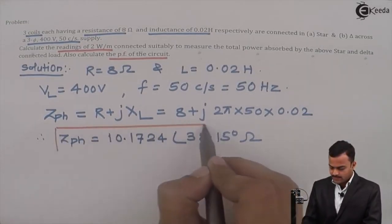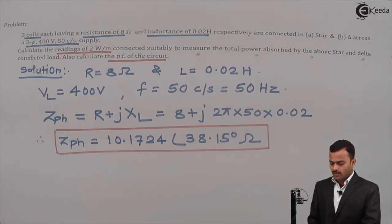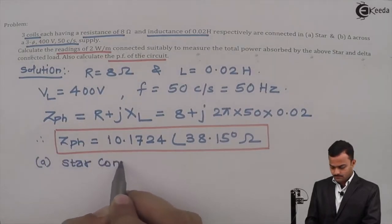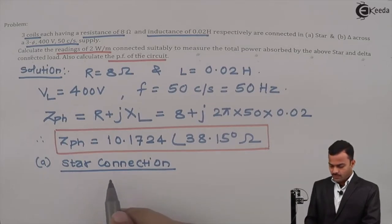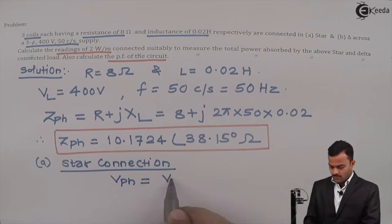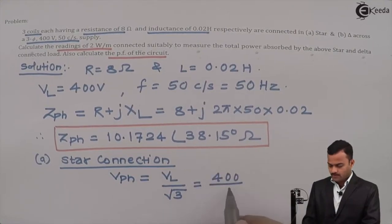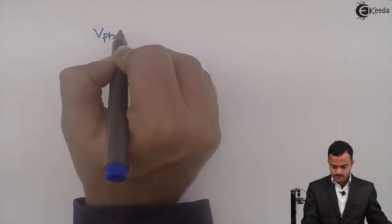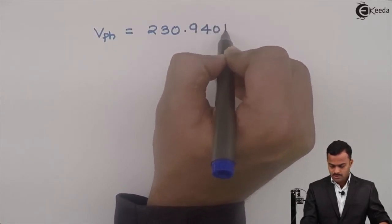Now, it's a star connected load. For star connection, we know phase voltage equals line voltage divided by root 3. So phase voltage is 400 divided by root 3, which gives us 230.9401 volts.